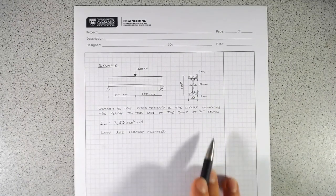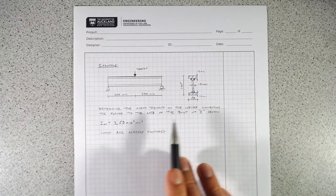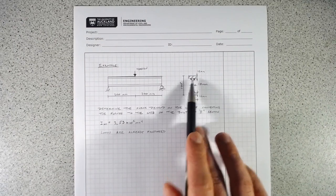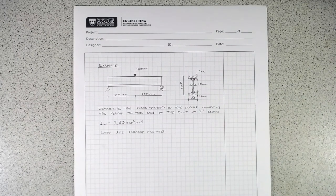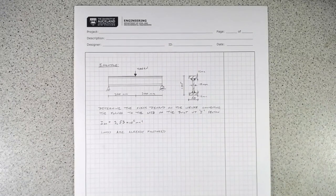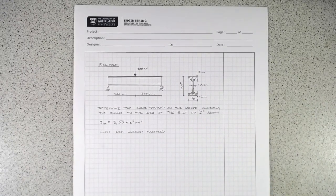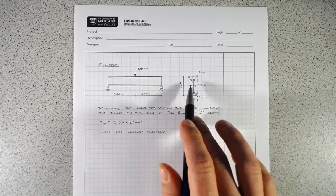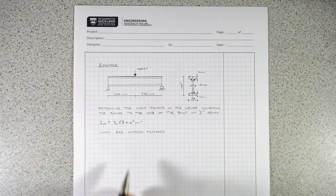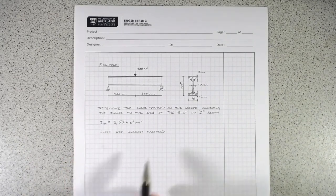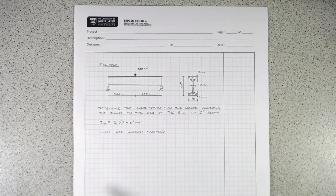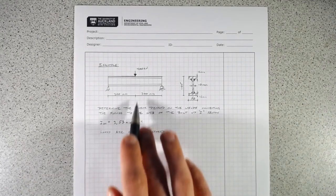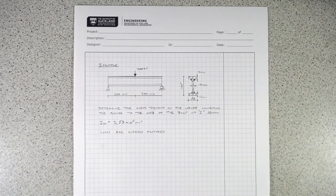We need to determine what the shear demand is at this junction, so we know what shear force we need to design these welds for. We won't design the welds in this example. This is simply showing, as a reminder on shear flow, how we get those demands. We're given the moment of inertia for the section, so we don't have to work that out, and these loads are already factored.